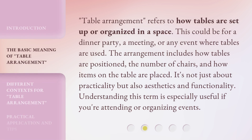Table arrangement refers to how tables are set up or organized in a space. This could be for a dinner party, a meeting, or any event where tables are used. The arrangement includes how tables are positioned, the number of chairs, and how items on the table are placed. It's not just about practicality but also aesthetics and functionality. Understanding this term is especially useful if you're attending or organizing events.